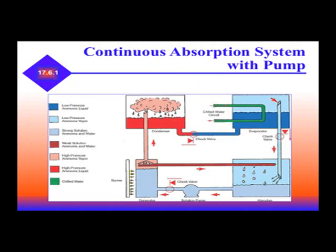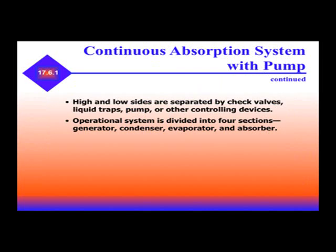This is a continuous absorption system with a pump. You'll notice the condenser, a check valve and pump, and we circulate chilled water through the evaporator — so this is a chiller system. High and low sides are separated by check valves, liquid traps, a pump, or other controlling devices. The operational system is divided into four sections: generator, condenser, evaporator, and absorber.